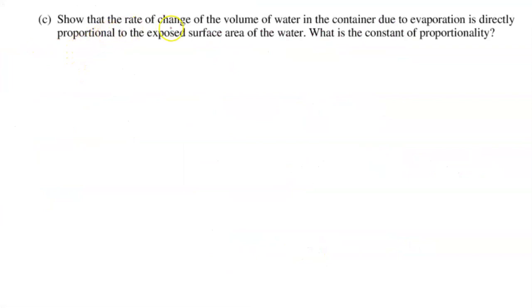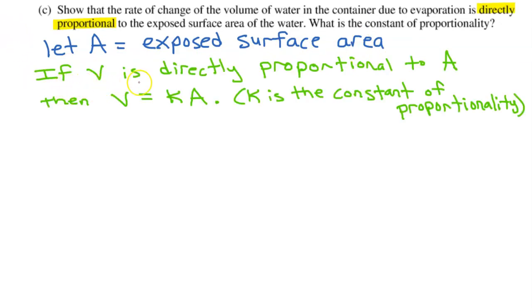Part C. Show that the rate of change of the volume of water in the container due to evaporation is directly proportional to the exposed surface area of the water. What is the constant of proportionality? First of all, let's define a new variable. We will let a equal the exposed surface area. Remember that if v is directly proportional to a, then that means v is equal to k times a, where k is called the constant of proportionality.